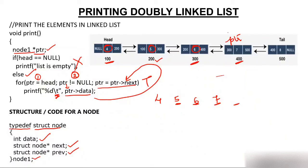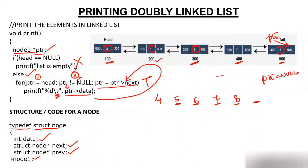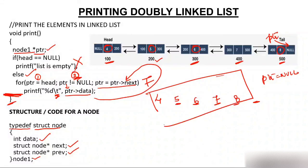I'll again increment PTR. PTR will have PTR->next, which is 500. So PTR will move to the 500 node — that is the node represented by tail. Again I'll check: is PTR not null? Yes, PTR is not null because the address is 500, condition becomes true. I'll move inside and print PTR->data, which is 8. I'll increment PTR; PTR->next is now null, so PTR becomes null. The condition becomes false and I'll move out of the for loop, having printed all elements.